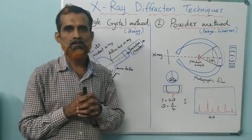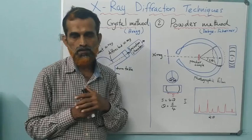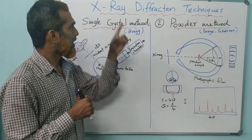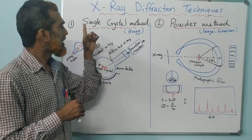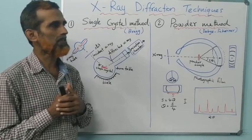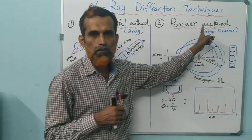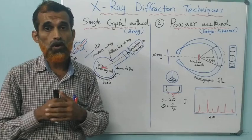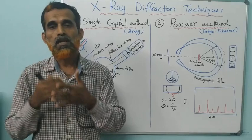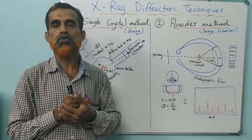Hi dear students, welcome to this online class. Today we discuss two important methods of XRD studies or X-ray diffraction techniques. The first method is the single crystal method, which mostly belongs to Bragg's method, and the second one is the powder method developed by Debye and Scherrer. In the previous class we learned about how X-rays are diffracted by crystals, leading to the famous Bragg's equation: nλ = 2d sinθ.